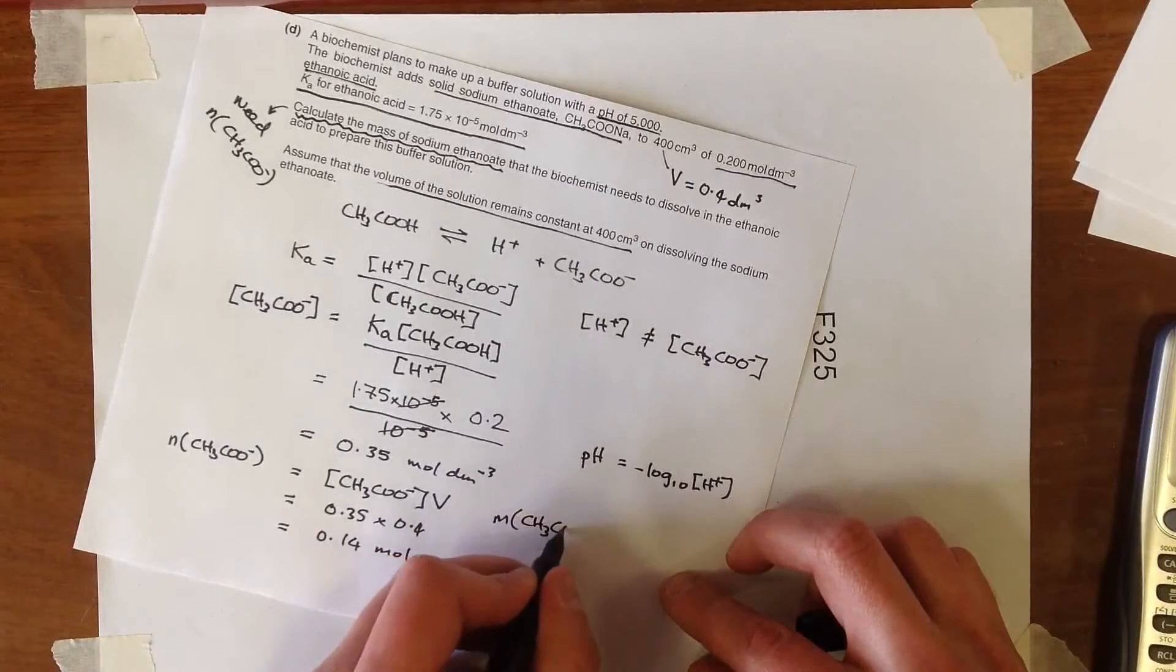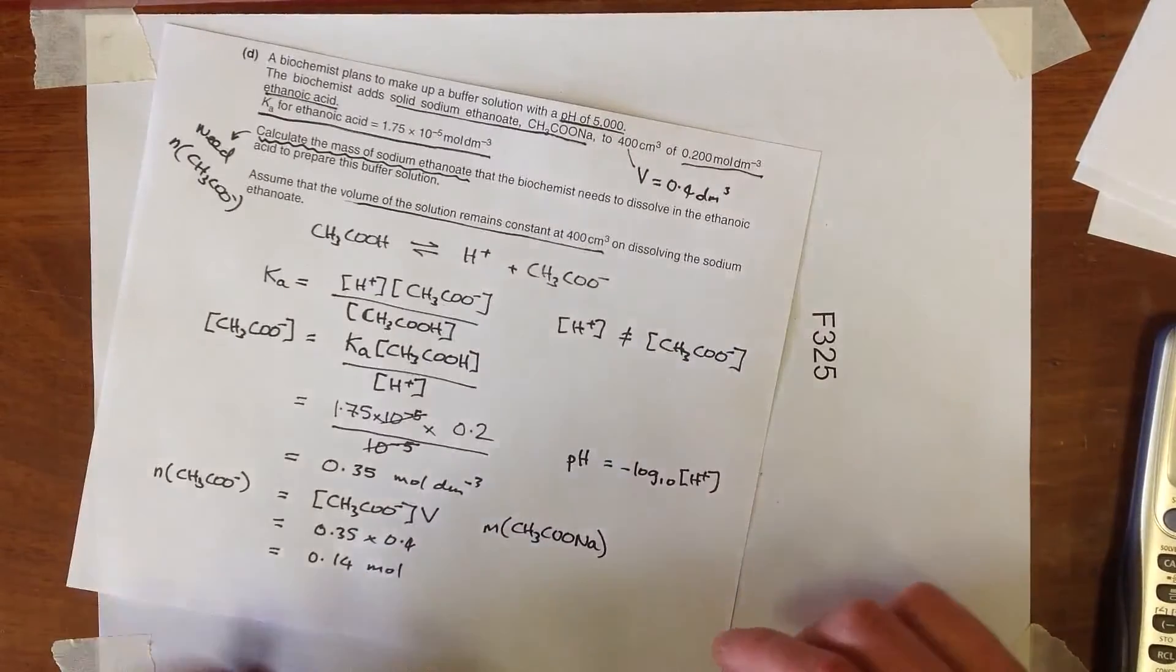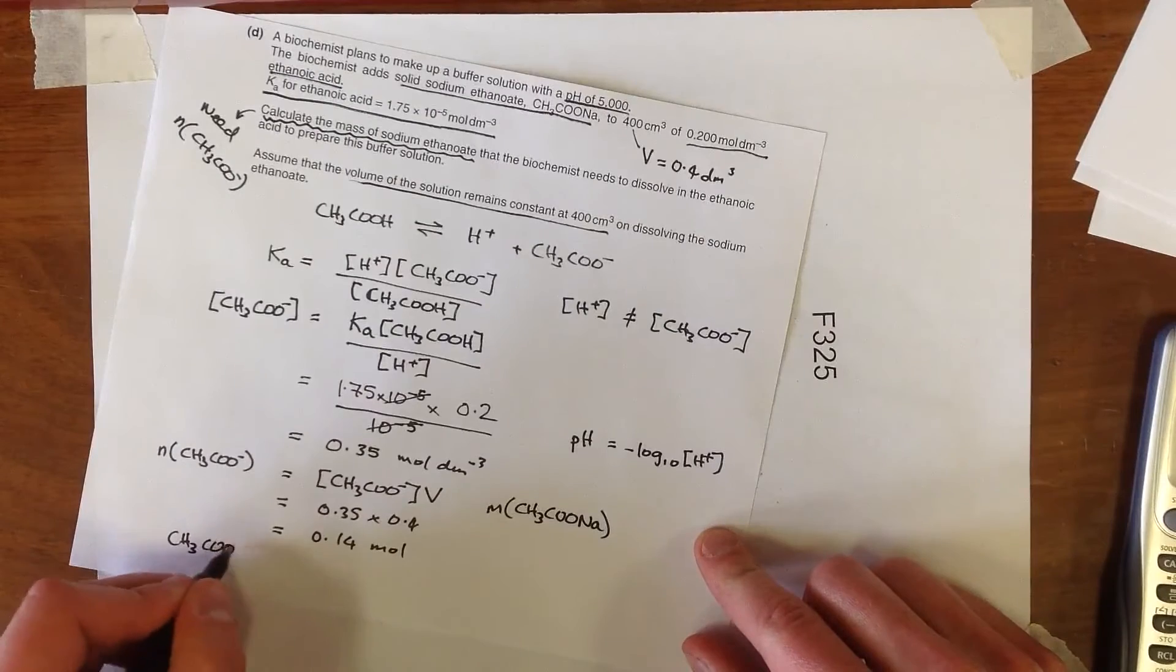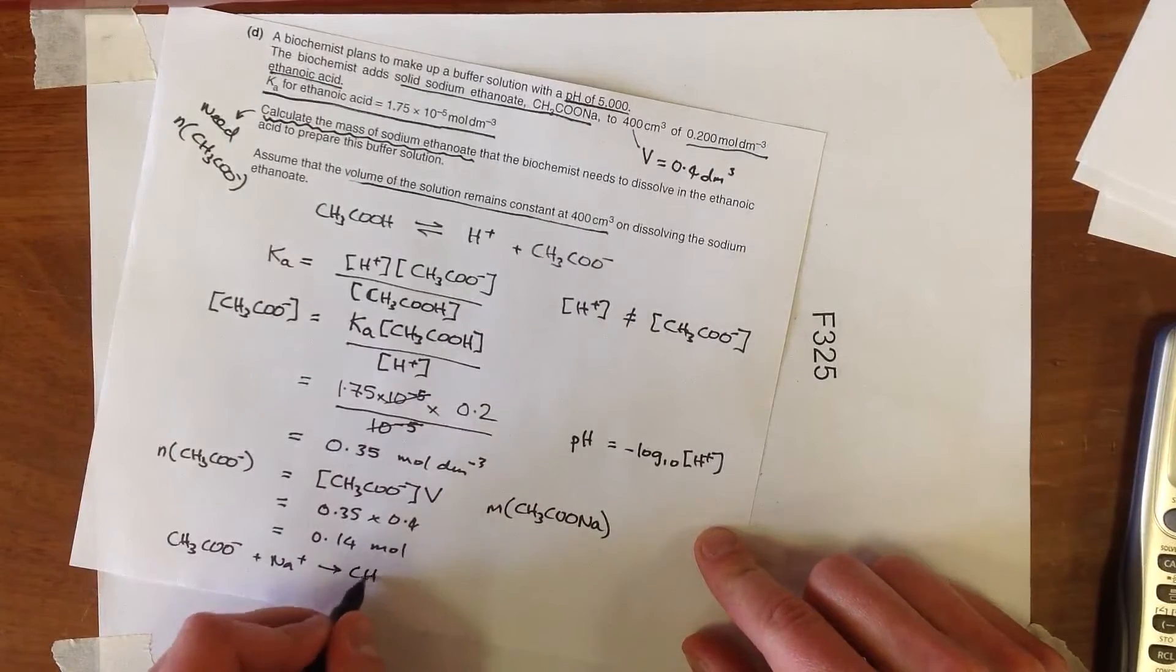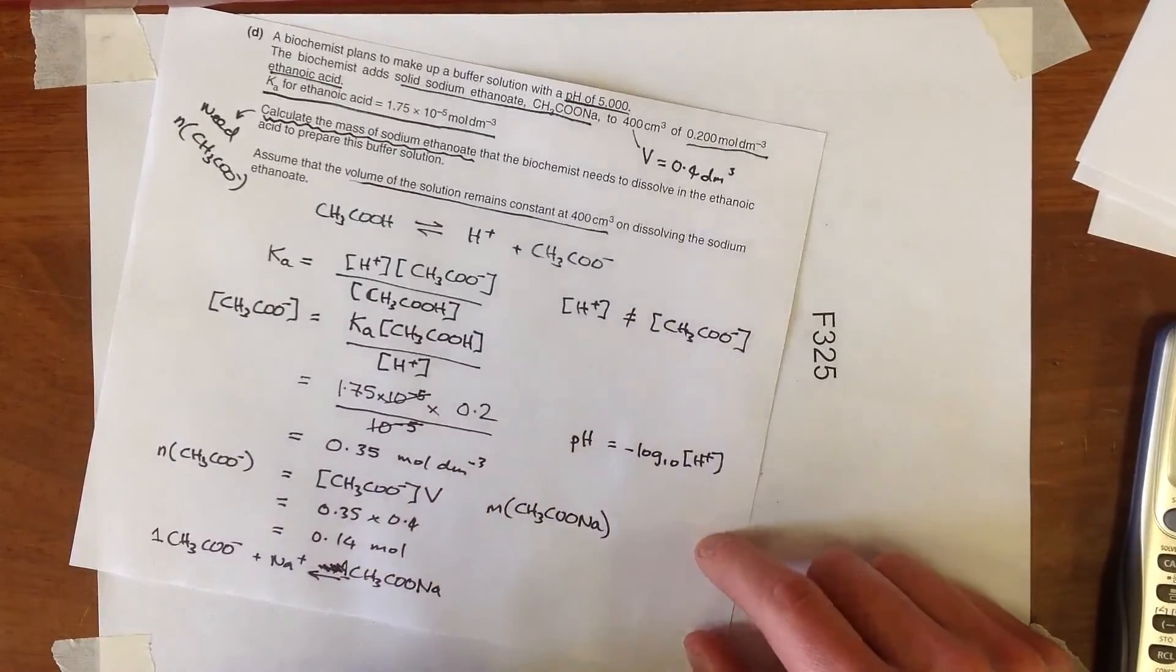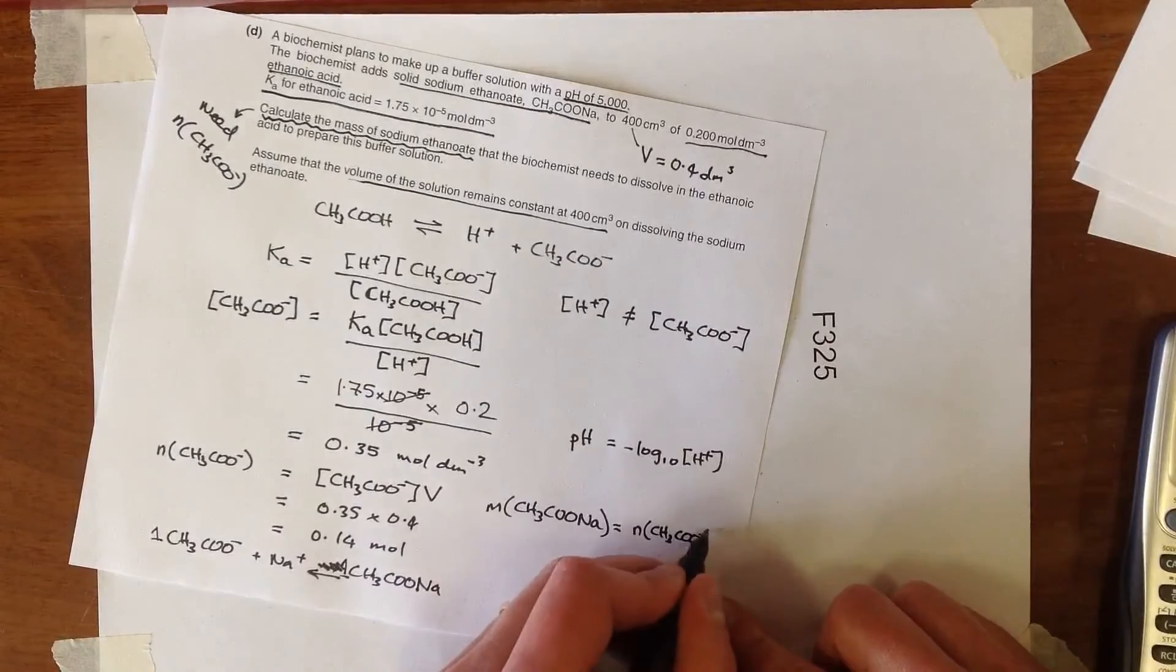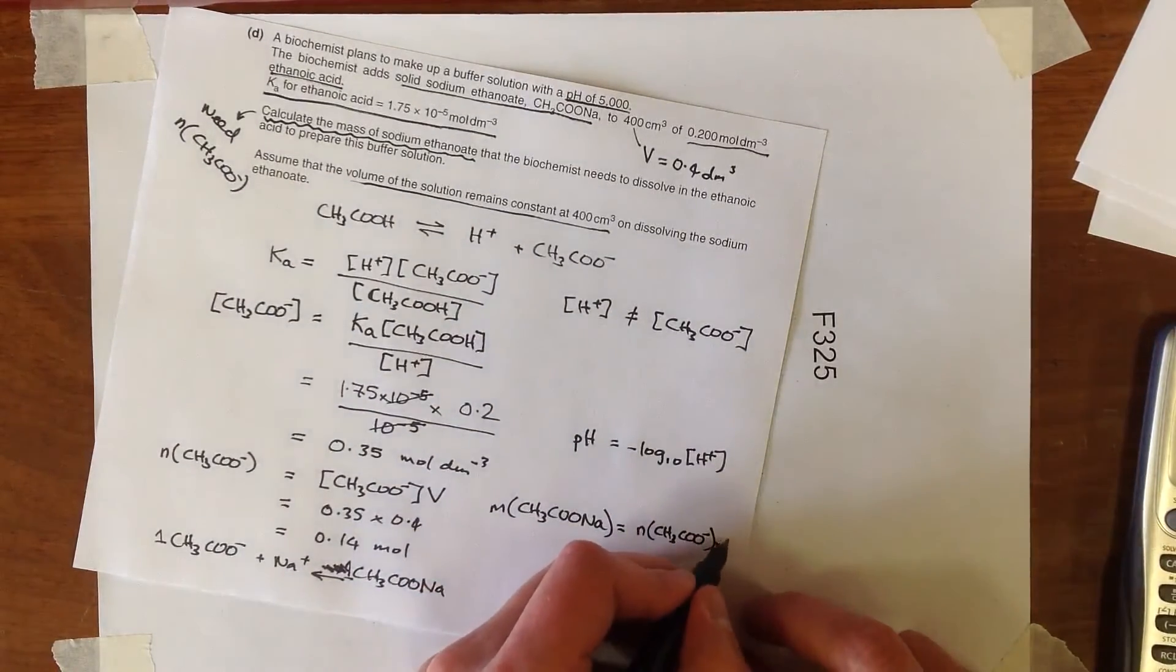so the mass of ethanoate that is needed. And now we need to remember that it's the sodium salt that's been used, not just the ethanoate. Now we know that CH3COO- is going to combine with 1 Na+ to form its salt. Well, rather we should probably have this arrow going in the reverse direction, because that's what's produced the ethanoate, and therefore there's a 1 to 1 ratio between these two. So the number of moles is the same.